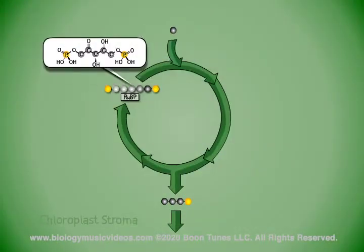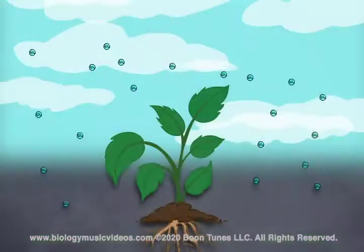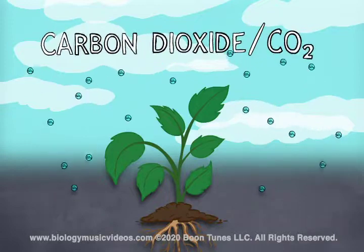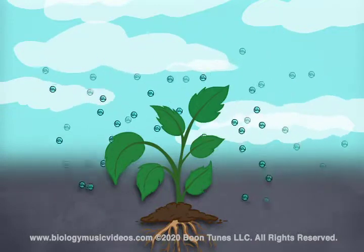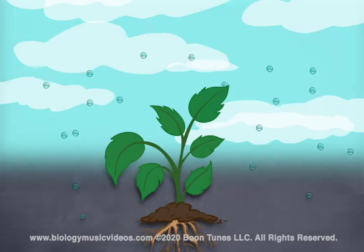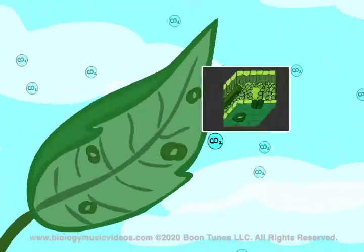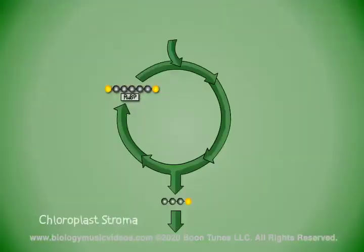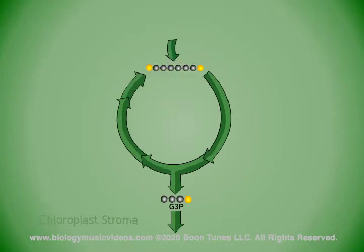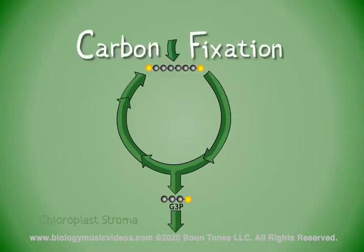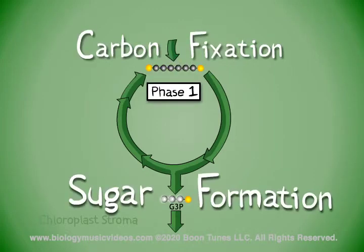The cycle begins initially with a sugar called RUBP, a starting compound which contains five carbon atoms in its chain. The RUBP must bind to carbon dioxide, or CO2, so the plant takes in CO2 from the surrounding air outside. The CO2 is in a gaseous state and diffuses through the leaf's stoma, then moves to the stroma where it will be fixated into RUBP.